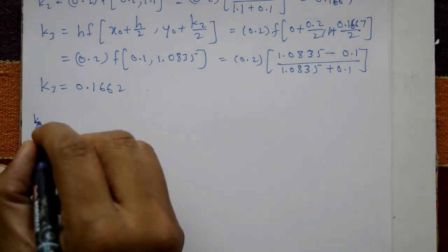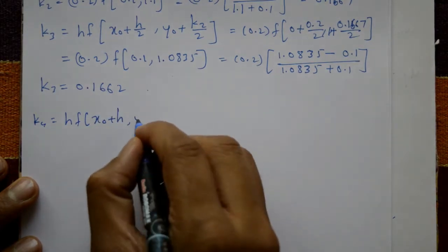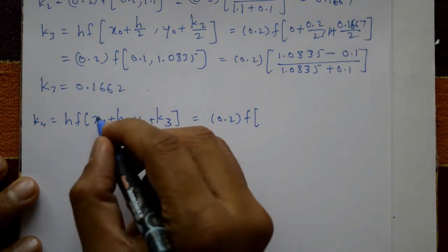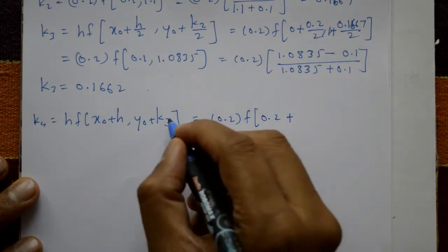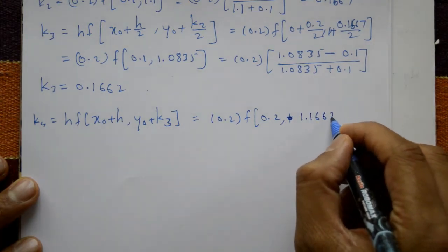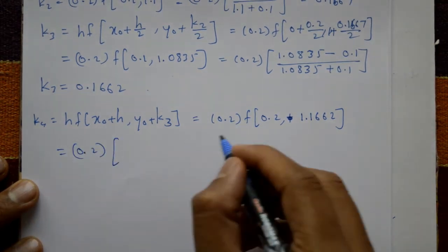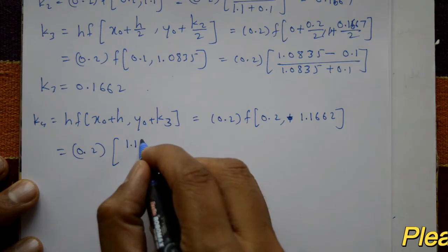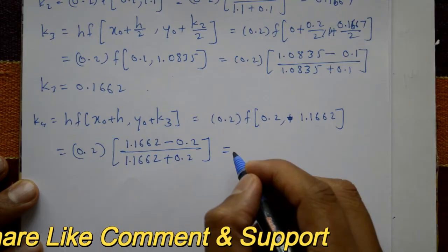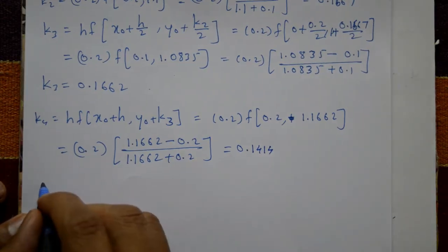k4 equals h times f(x naught plus h, y naught plus k3). With x naught equal to 0, h equal to 0.2, y naught equal to 1, and k3 equal to 0.1662, this gives f evaluated at x equal to 0.2 and y equal to 1.1662. So k4 equals 0.2 times (1.1662 minus 0.2) divided by (1.1662 plus 0.2), giving k4 equal to 0.1414.